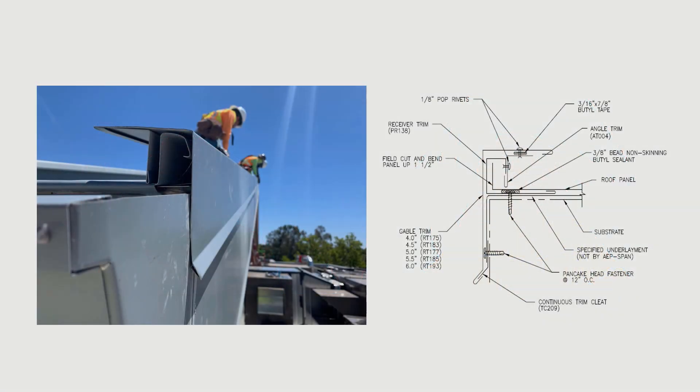Varying panel widths and thermal movement must be considered when detailing full-length roof panels at gable or rake conditions. Installers will typically not be able to utilize a full-width panel at these locations. Specialized details allow for cutting the panel to the necessary width and field-folding the edge, which is then secured into a continuous receiver trim. The panel turn-up and receiver trim offer a mechanical means of waterproofing as well as allowing unrestricted free movement of the panel within the receiver trim.